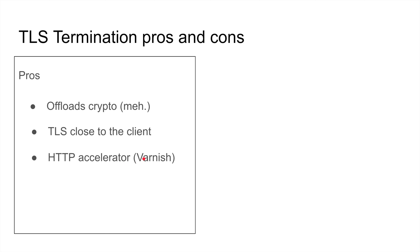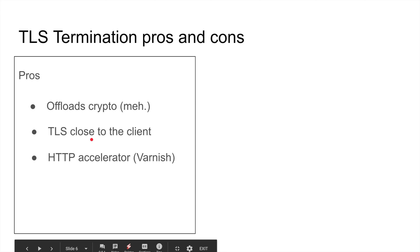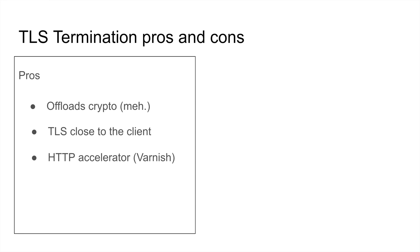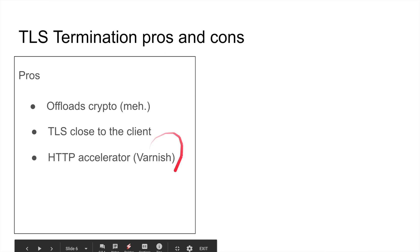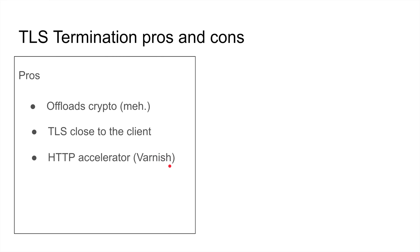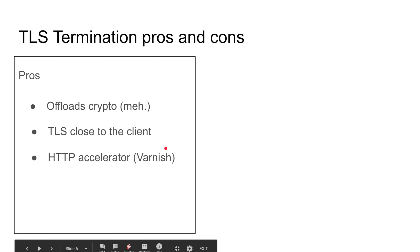Third pro: once you terminate TLS and decrypt the traffic, you can take advantage of powerful HTTP accelerators like Varnish. Varnish does caching, resolves hostnames, compresses files, compacts JavaScript, and can even rewrite JavaScript to make it perform better. We'll be making a dedicated video about Varnish. HTTP accelerators are only possible because the traffic is decrypted at the proxy layer.